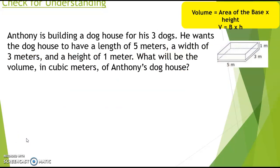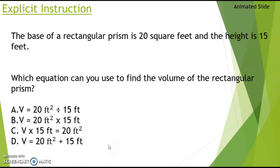Anthony is building a doghouse for his three dogs. He wants the doghouse to have a length of five meters, a width of three meters, and a height of one meter. What will be the volume in cubic meters of Anthony's doghouse? Pause the video, calculate it on a separate piece of paper, then come back. Did you multiply the area of the base first — five times three — and get fifteen square meters? Then multiply by the height of one meter to get fifteen cubic meters.